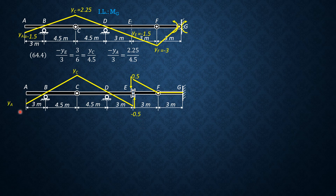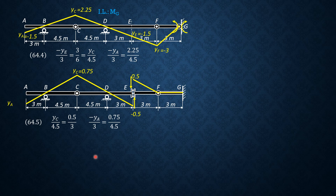For the remaining ordinates Y sub C and YA: by similar triangles, Y sub C is to 4.5 equals 0.5 is to 3, so Y sub C equals 0.75. Then negative YA is to 3 equals Y sub C is to 4.5, giving YA equals negative 0.5. So YA is negative 0.5, Y sub C is 0.75, and the FG portion remains horizontal. That's the influence line for shear at E.